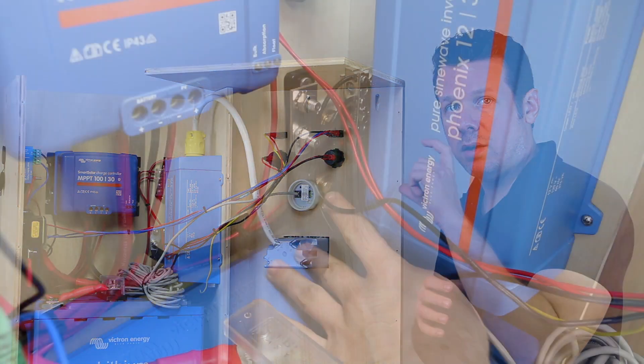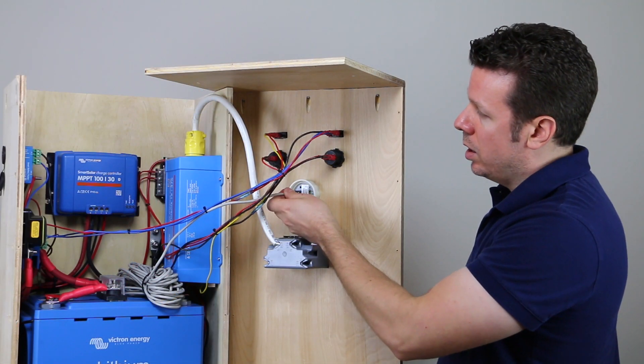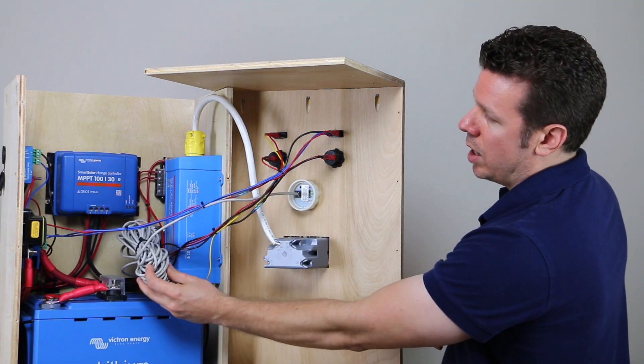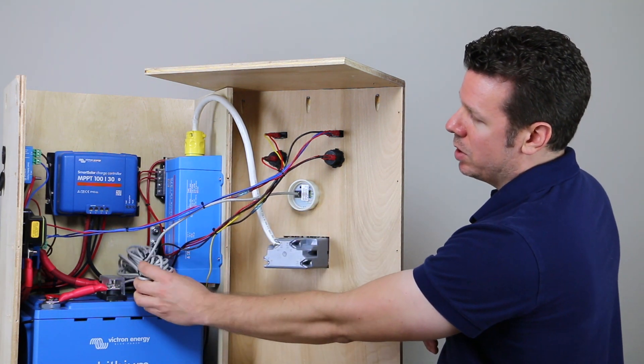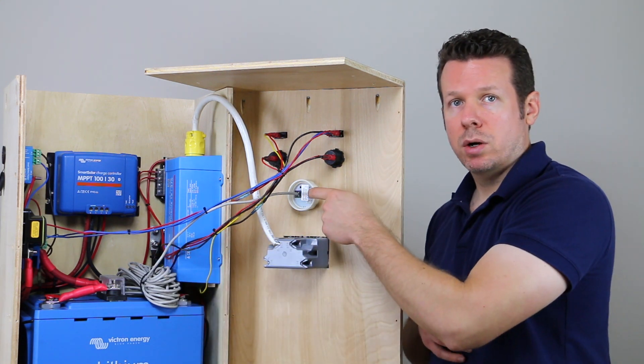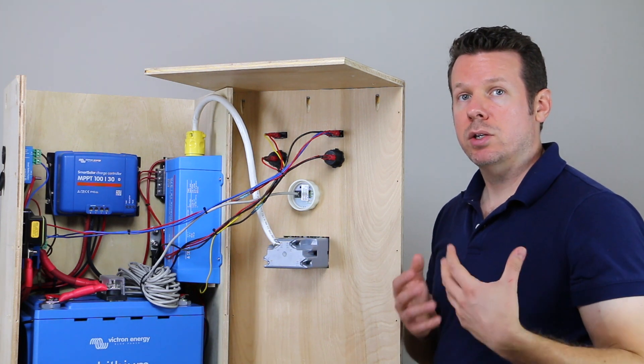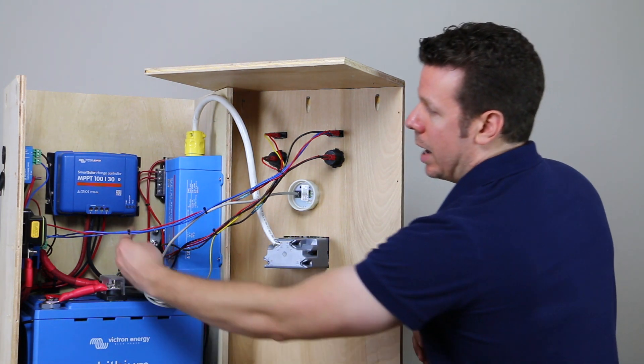So system negative is comprised of a shunt that's part of our battery monitor. And so you can see this gray cable here, it's a little bit longer than we needed, but that gray cable connects the battery monitor screen with the shunt where all the measurements and calculations are done there at system negative.